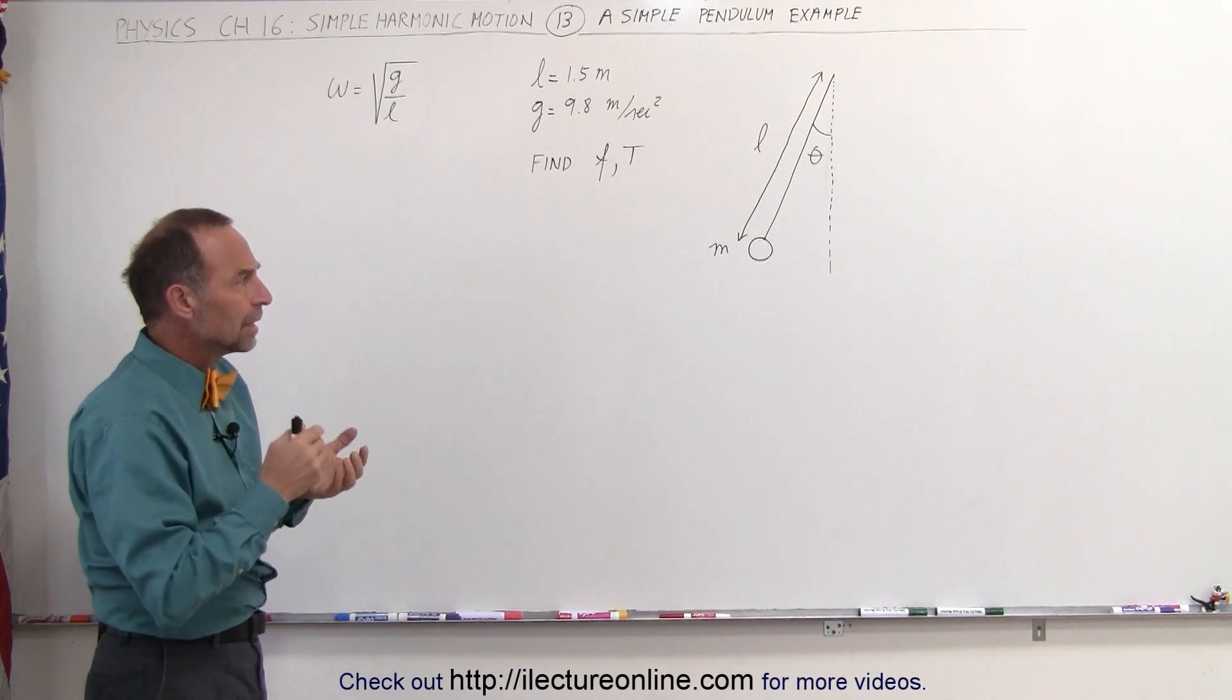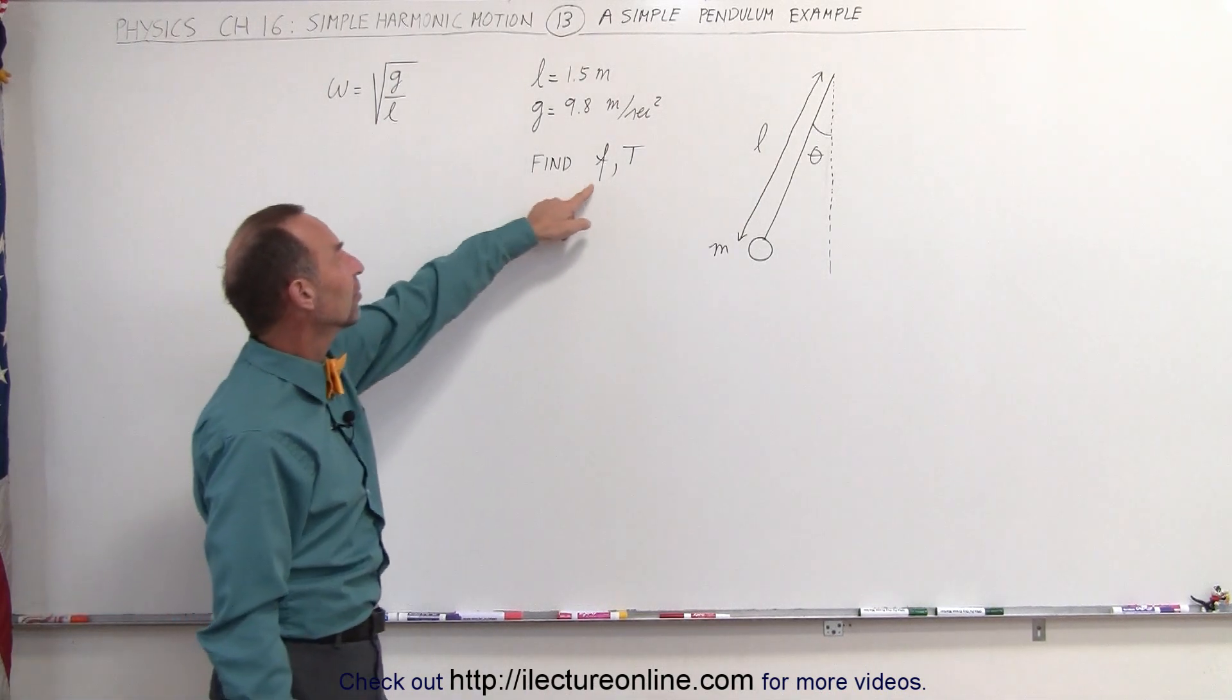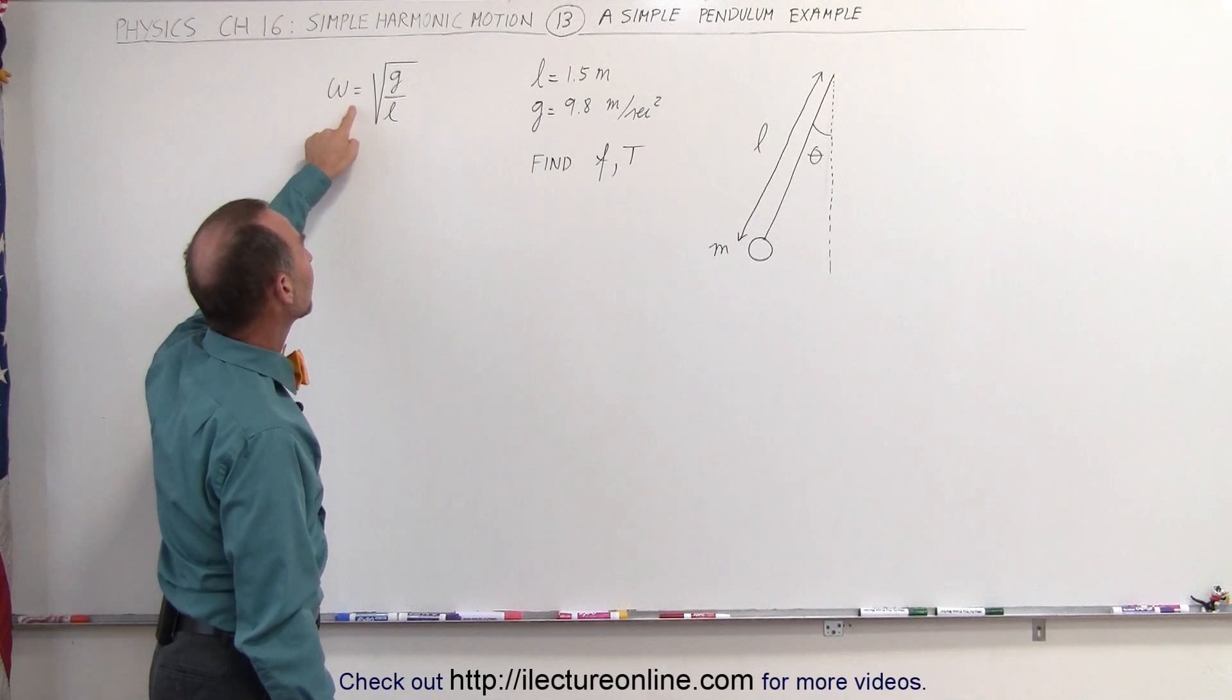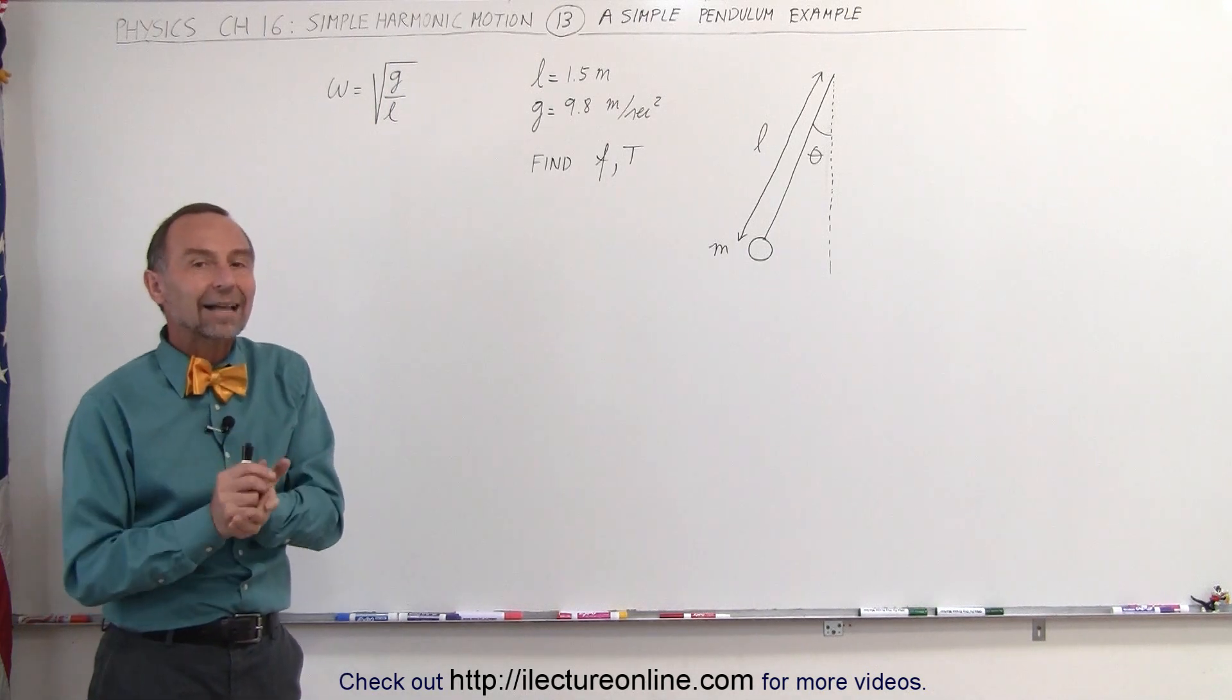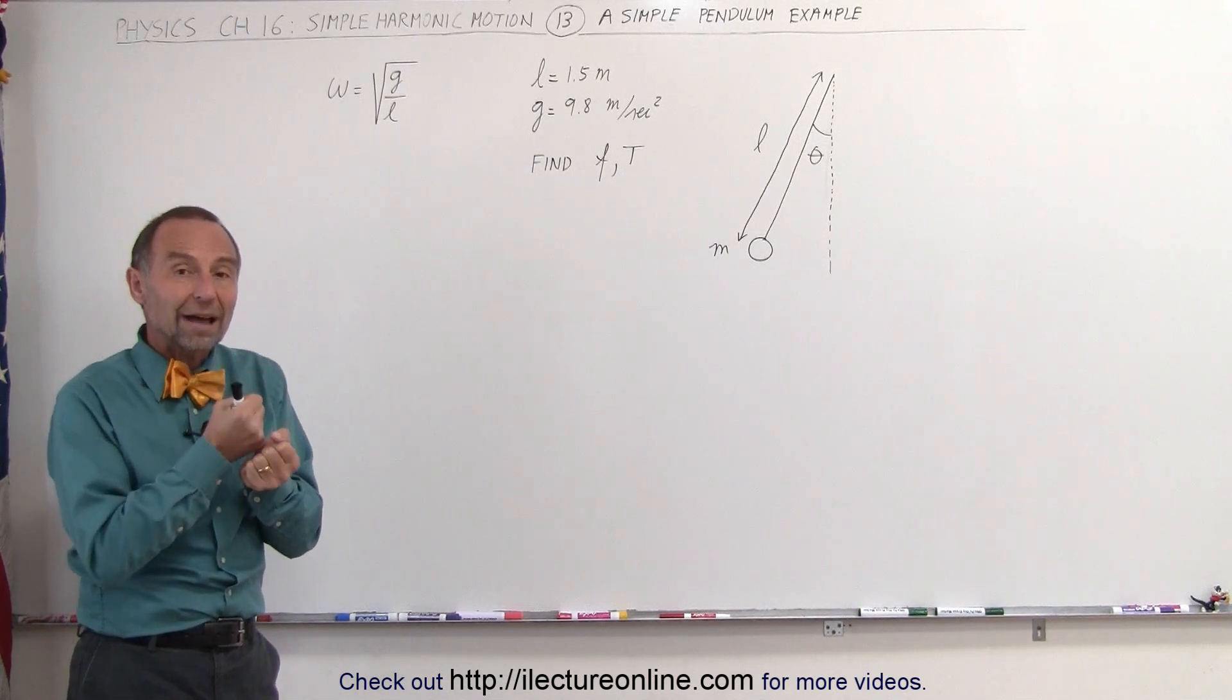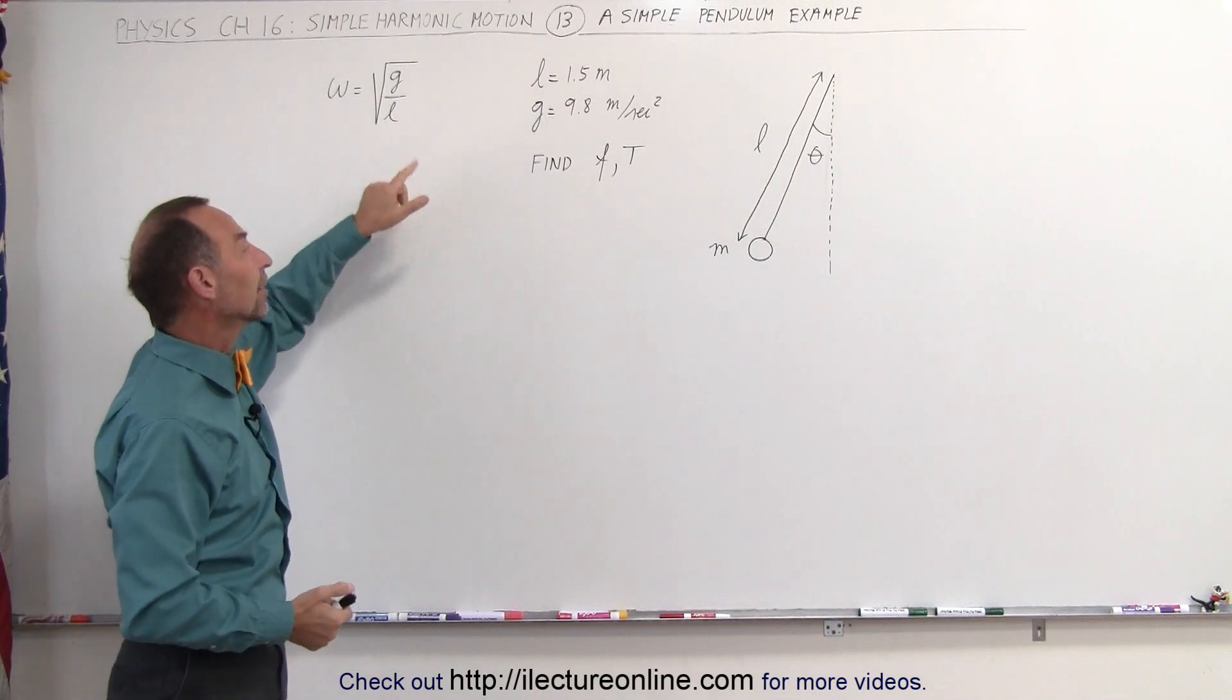The way we solve the pendulum problems typically is to find either the frequency or the period through finding the radial frequency. The radial frequency omega is equal to the square root of g over l. Now, in this case, omega is not the square root of k over m, it's the square root of g over l. It's the force of gravity that brings the pendulum back to the equilibrium point. That's why we have a g in the numerator here.